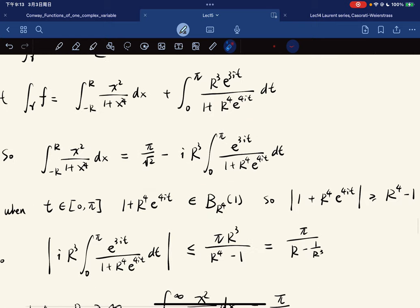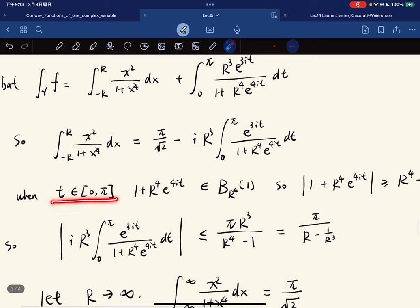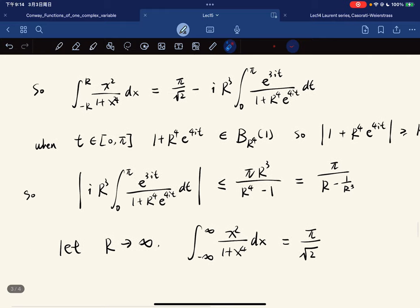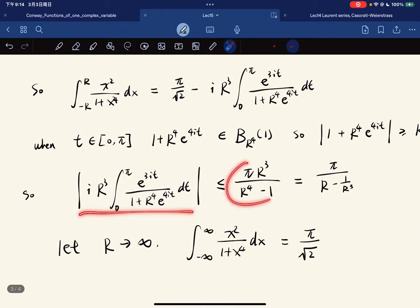Now this one is equal to, we just plug in here, this one gets this. So we just want to estimate this one. But whenever t is in zero to pi, this is in the ball with radius R to the power 4, which means that its norm should be greater than R to the power 4.